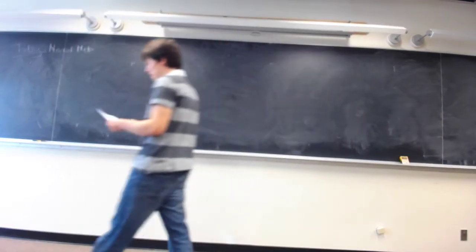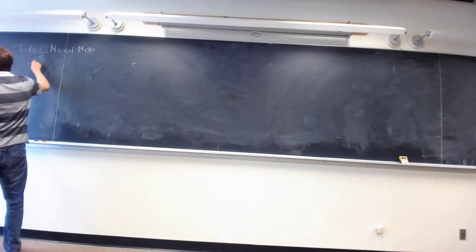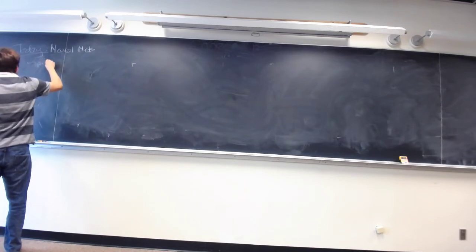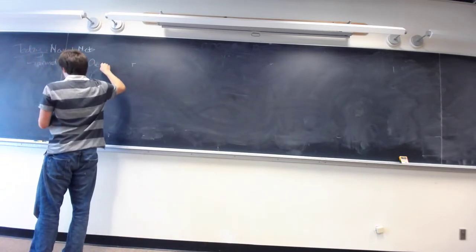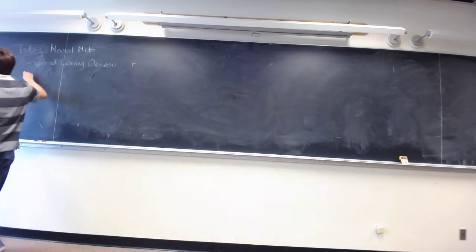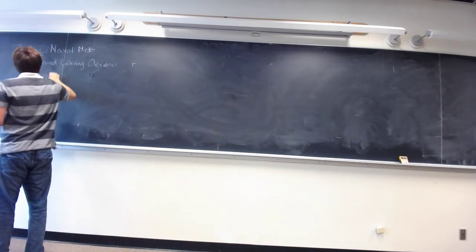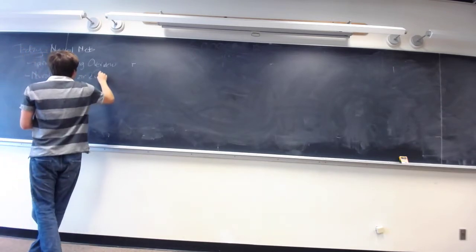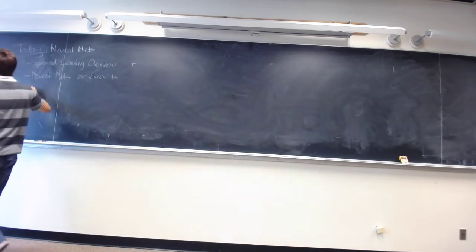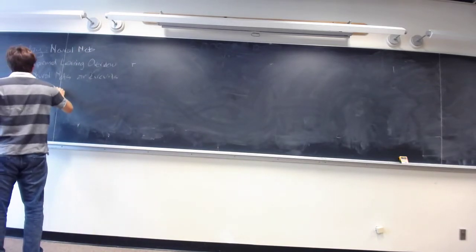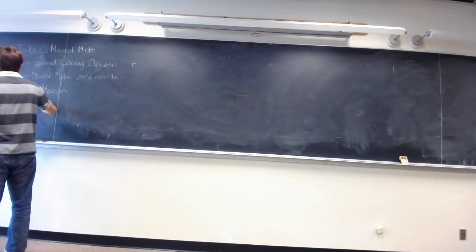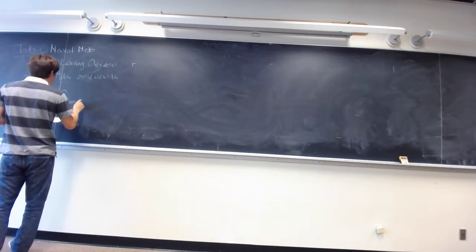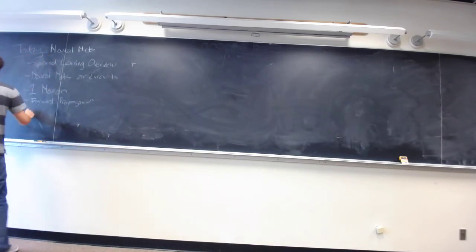All right, so let's start. First we're going to go over supervised learning — a quick overview of what we've covered so far and how neural nets are going to fit into that. Then we're going to look at neural nets as circuits, then take a look at one neuron. I'll do an example with that, and then we'll do forward propagation and back propagation.